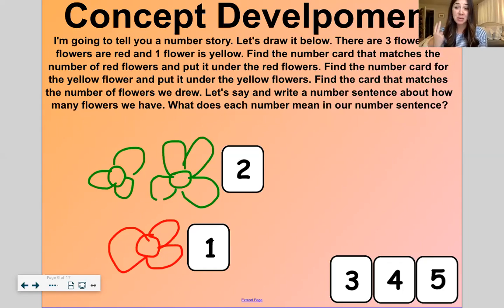So when we say the number 2, that means we have two green. And when we say the number 1, that means we have one red. And then when we say the number 3 right here, that means we have three flowers all together. Let's do one more like this.